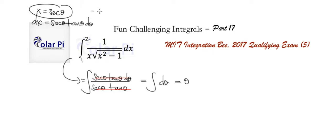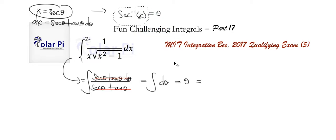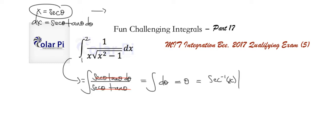With this here, we know that it follows that sec inverse of x is going to equal theta. So now let's put on limits of integration. I can't have the limits of integration in terms of x's here because I had changed to theta by the time we got here. But now we can say that, with our original substitution, theta has to equal sec inverse of x. Now that we've gotten back to x's, to answer the question with the limits of integration, we have to evaluate sec inverse of x at 1 and 2.